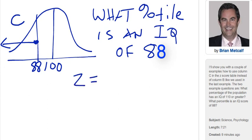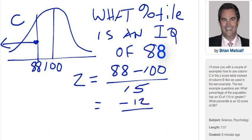I just simply want to know what's in column C there. So I need to convert 88 to a Z-score so I can look it up in the table. So 88 minus a population mean of 100 divided by the standard deviation of 15 is equal to negative 12 divided by 15. And negative 12 divided by 15 is equal to a negative 0.80. So that's my Z-score.